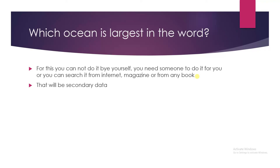Now let's talk about an example. The example is: which ocean is the largest in the world? For this we are unable to find the answer by ourselves, so you need to search from the internet, read from magazines, or search from a book. This is not primary data — this is secondary data because you cannot collect it by yourself; you have to get it from someone else or somewhere else.